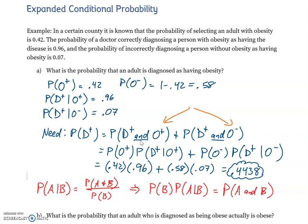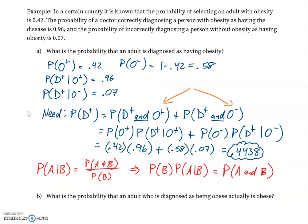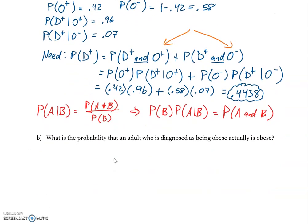A diagnosis doesn't necessarily mean you are obese. Now let's try Part B: what is the probability that an adult who is diagnosed as being obese actually is obese? So we want P(O+ | D+).